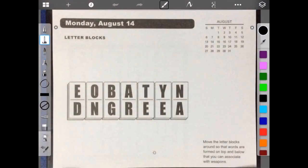Hello, welcome to Brain Games Calendar 2017. We're in week 33, day one. We have letter blocks. Let's begin. Move the letter blocks around so that words are formed on top and below that you can associate with weapons.